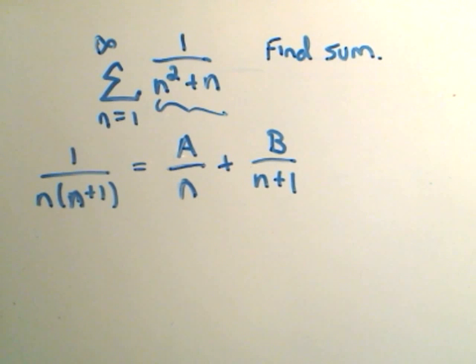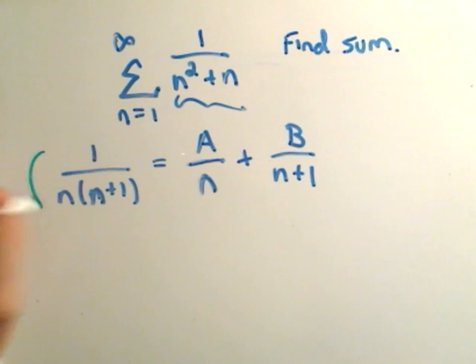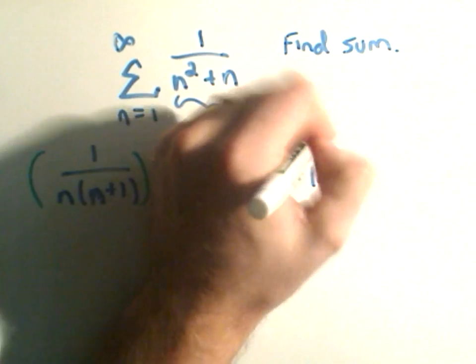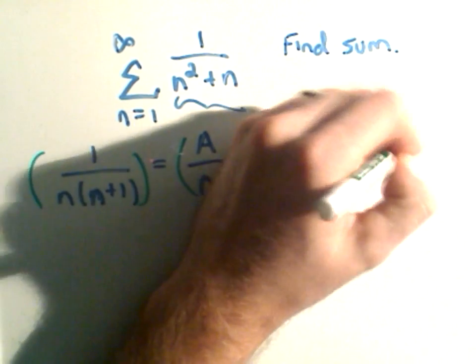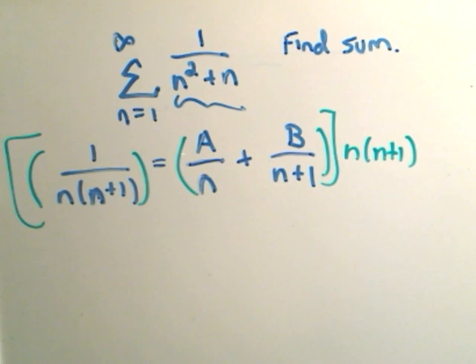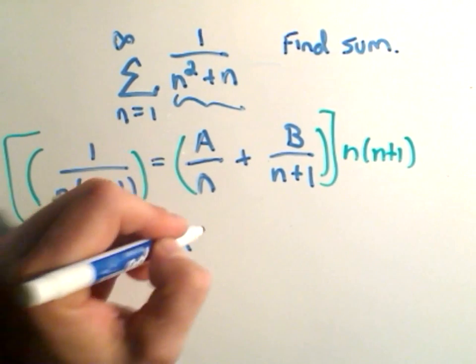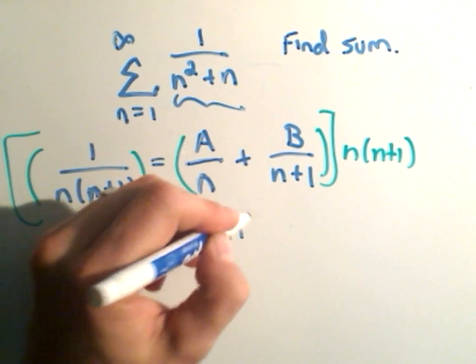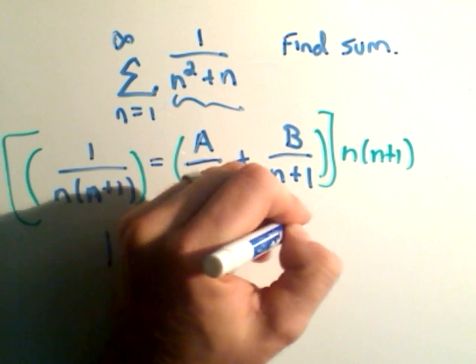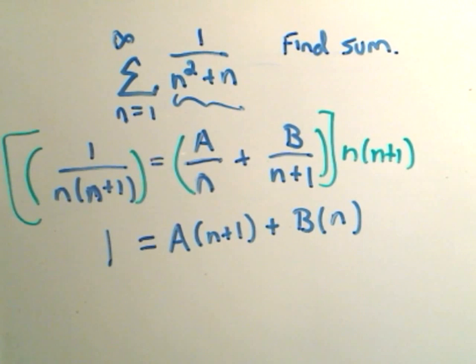The way that we simplify this is we multiply both sides by n times n plus 1. So we'll do that to both sides here. If I distribute it way over to the left, I'll just be left with 1. On the right side, I'll get A. The n's will cancel, and I'll have n plus 1 left over. And then B times the n plus 1's will cancel, and I'll just have n left over.